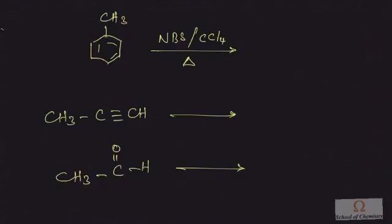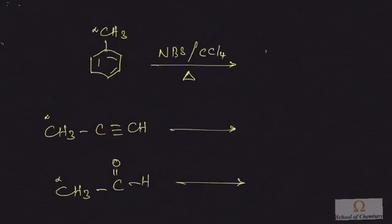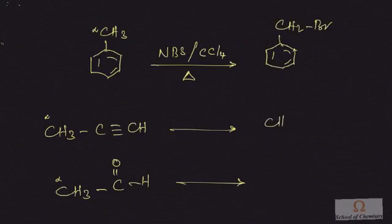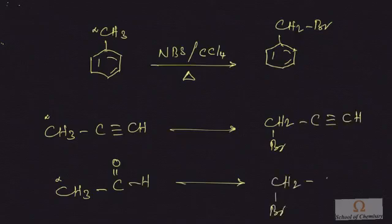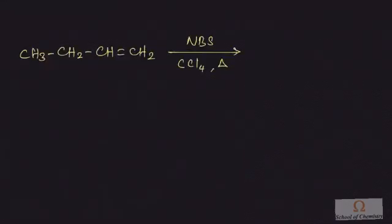NBS also substitutes bromine at the alpha position to an aromatic ring, at the alpha position to a triple bond, and at the alpha position to a carbonyl group. The products obtained have bromine substituted at the alpha position: the triple bond remains untouched, and for acetaldehyde, bromine is substituted at the alpha carbon.